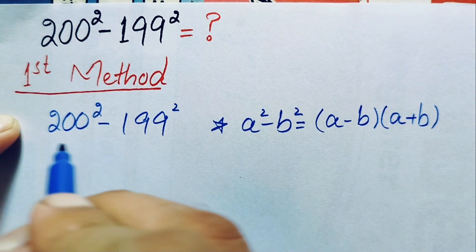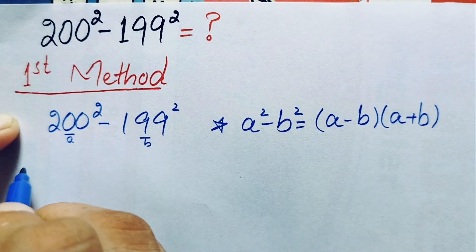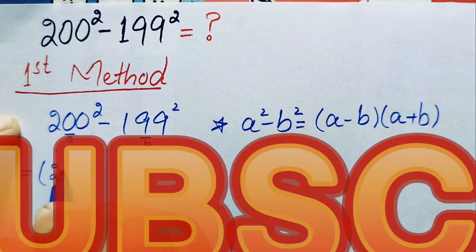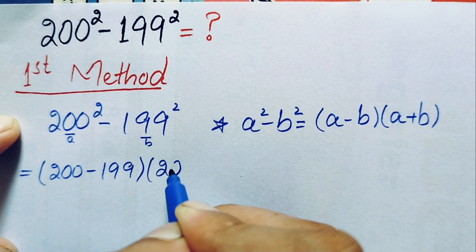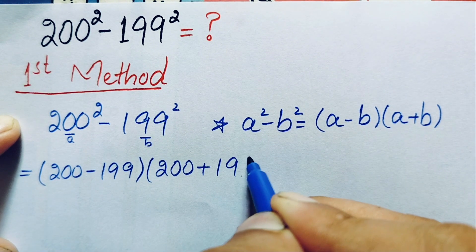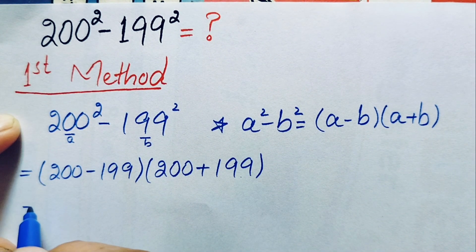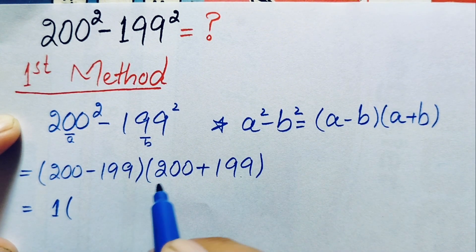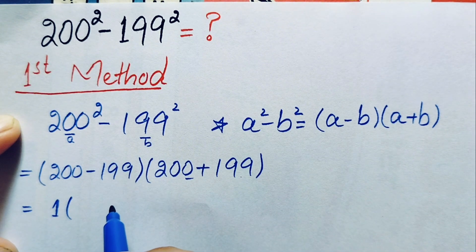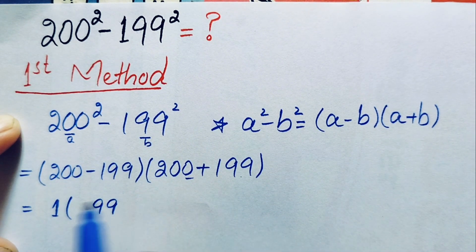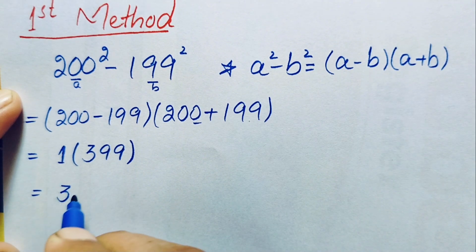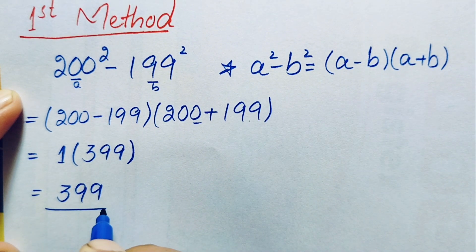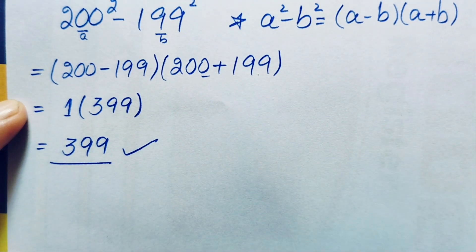Using this identity, where a is 200 and b is 199, this becomes 200 minus 199, times 200 plus 199. The subtraction gives 1, and the addition gives 399. Multiplying 1 times 399 gives us 399. So 399 is our answer using the first method.